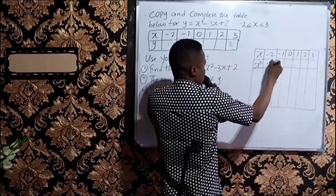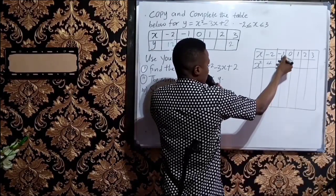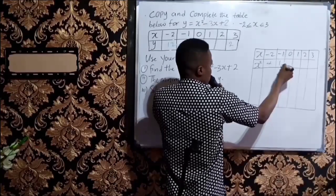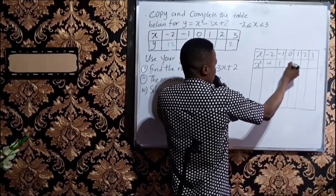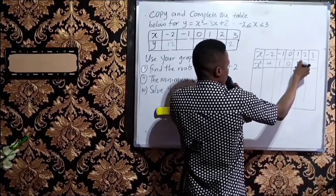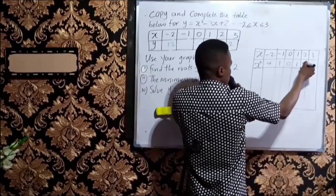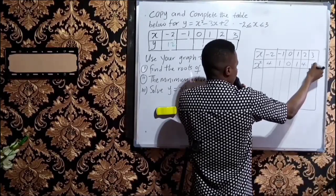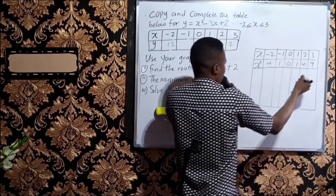So: minus 2 squared is 4, minus 1 squared is 1, 0 squared is 0, 1 squared is 1, 2 squared is 4, and 3 squared is 9.